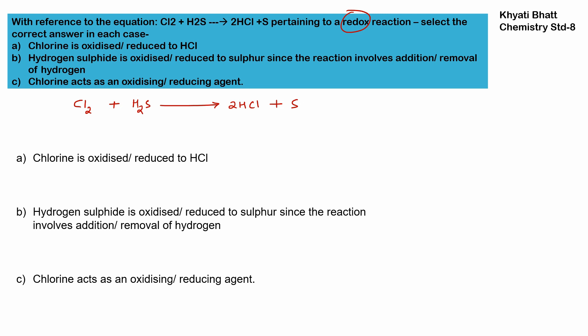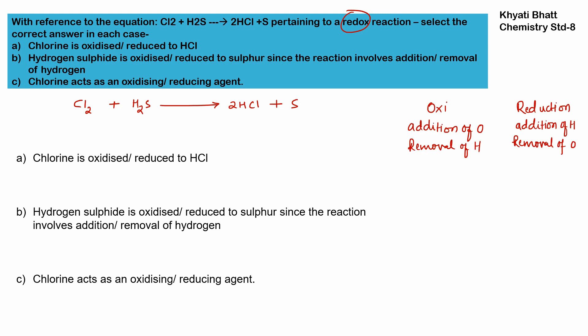Let us look at the difference between oxidation and reduction. In oxidation, there is an addition of oxygen and removal of hydrogen. In reduction, there is an addition of hydrogen and removal of oxygen. These two processes are quite opposite to each other.